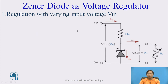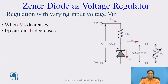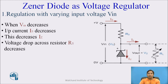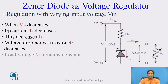The second regulation is with varying input voltage Vin — decreasing Vin. If Vin decreases, IS decreases. If IS decreases, Iz also decreases proportionally, but IL remains the same. And as IL remains the same, the voltage across the resistor RS decreases, and due to this, the output voltage remains constant again.